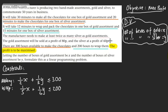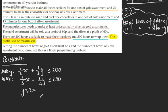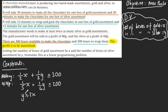The manufacturer needs to make at least twice as many silver as gold. This is an inequality that catches a lot of people out. We can write this as y is greater or equal to 2x. Or you could say y over 2 is greater or equal to x. If you're struggling, try it numerically and you'll see it holds true. So y is greater or equal to 2x.